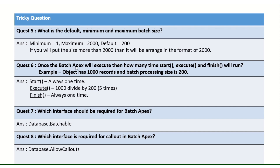Once Batch Apex executes, how many times do start, execute, and finish run? The start method runs only once and the finish method runs only once. But execute runs depending on your data size and batch size. For example, with 1000 records and a batch size of 200, execute will run five times.